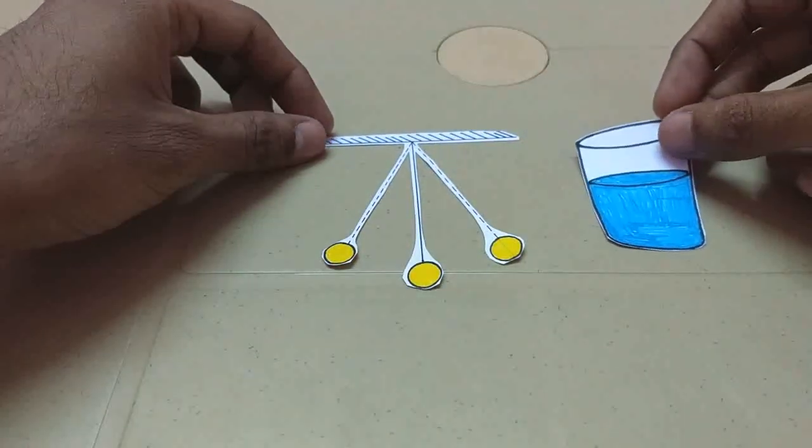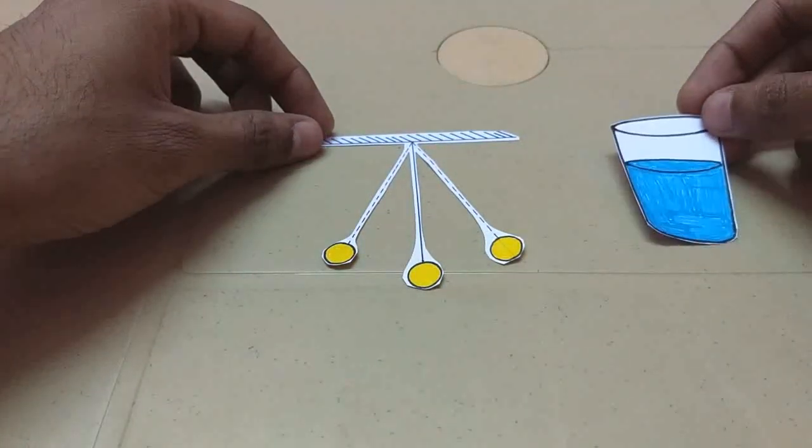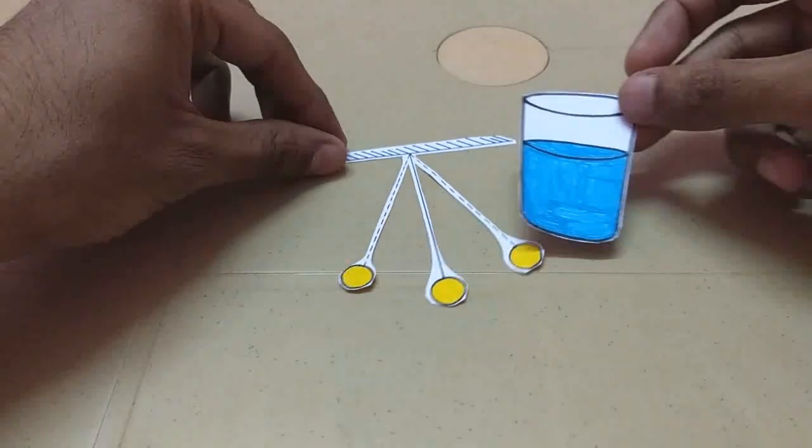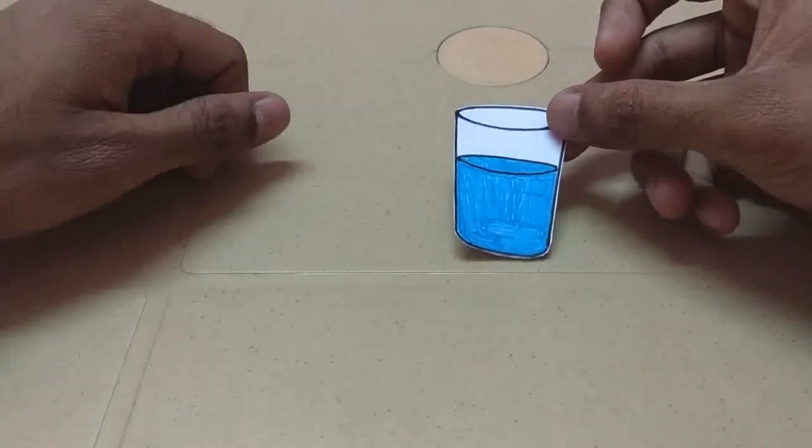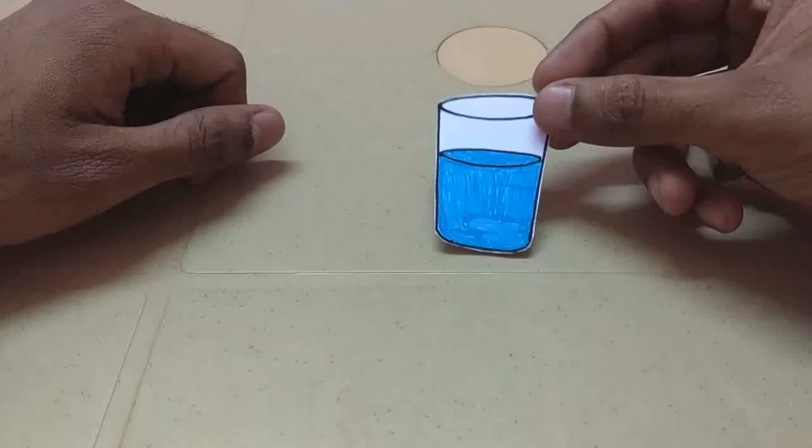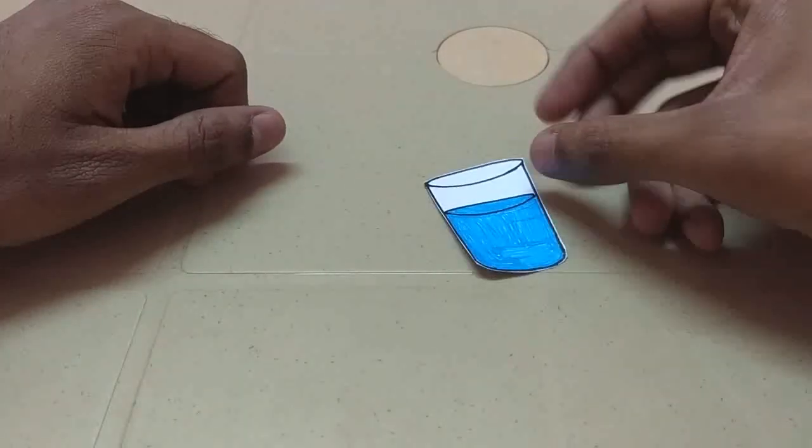Alright, now let's talk about the methods to determine the natural frequency of an object. Let's consider this beaker for further examples and what are the available methods to determine the natural frequency of this beaker. So there are three methods.